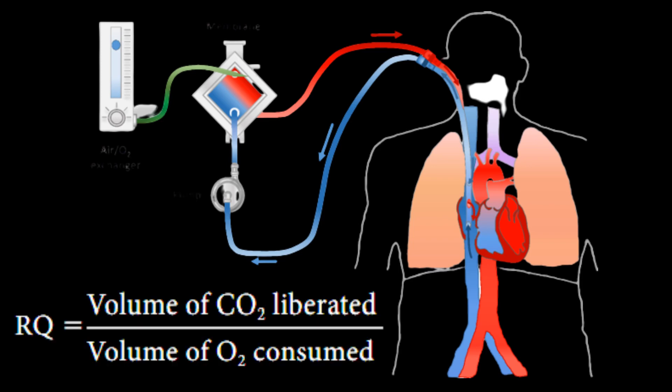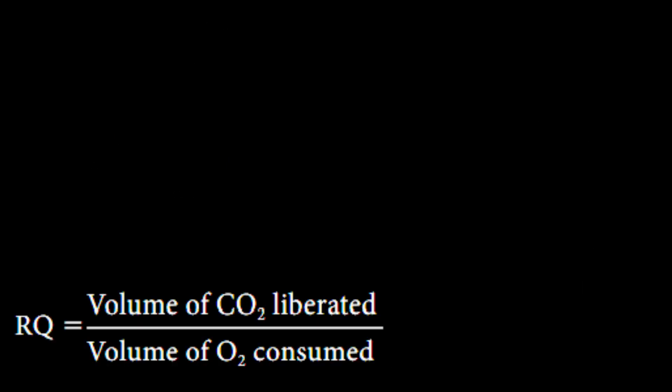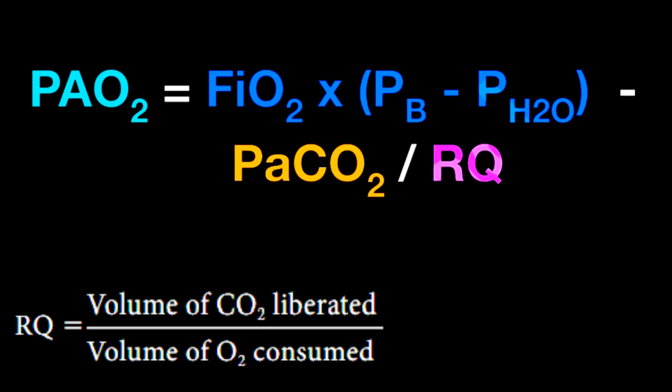Therefore, the respiratory quotient decreases. The change in respiratory quotient modifies the alveolar PO2, which is a function of both FiO2 and the PCO2 divided by respiratory quotient, according to the alveolar gas equation.